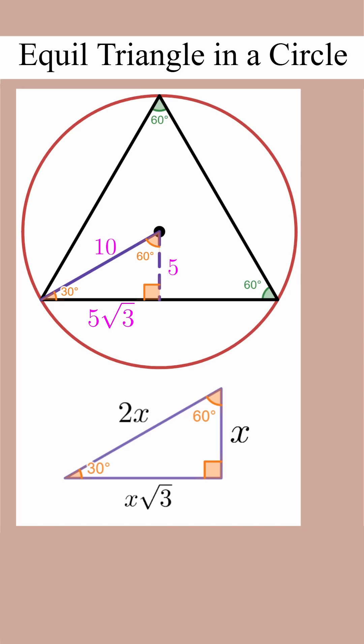And this perpendicular that I dropped cuts the base into two equal parts. It bisects it. So the right half is also 5 root 3, and that makes this entire side 10 root 3.